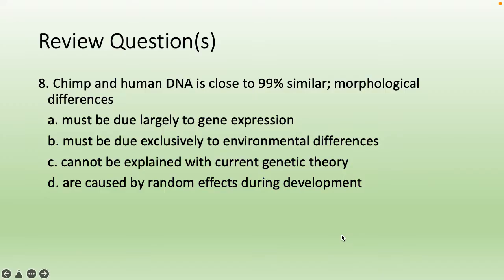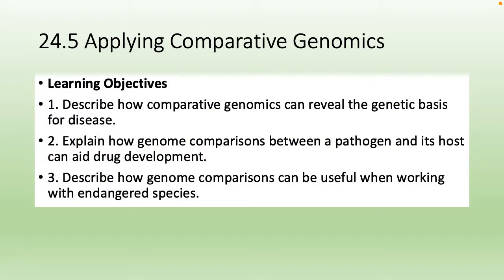Review question: Chimp and human DNA is close to 99% similar, and morphological differences must be due largely to gene expression — when those genes get turned on. The answer is A.